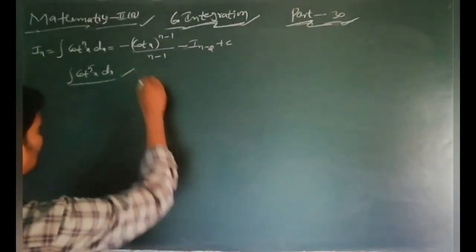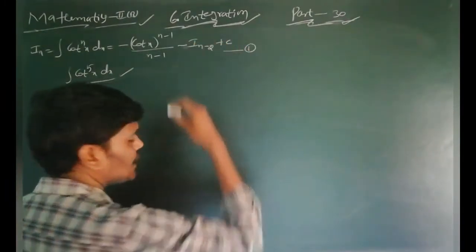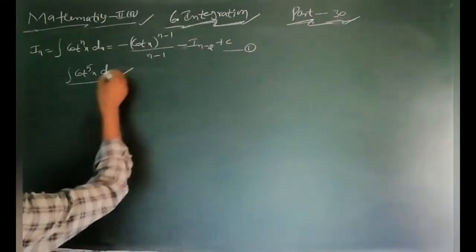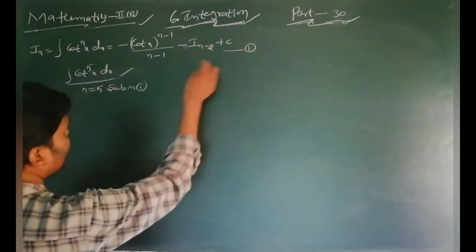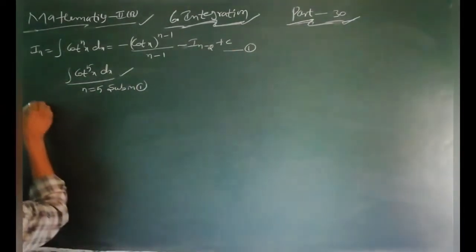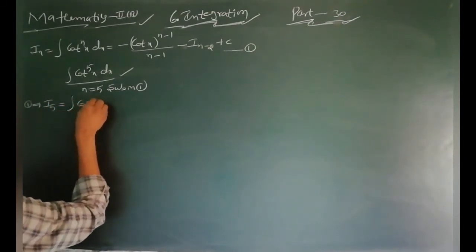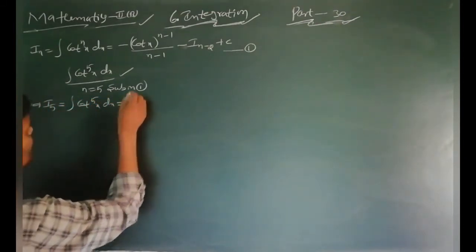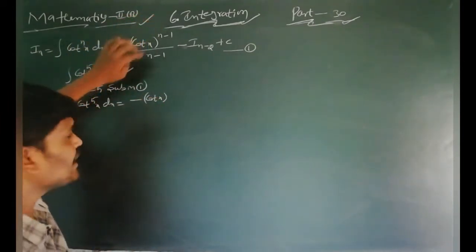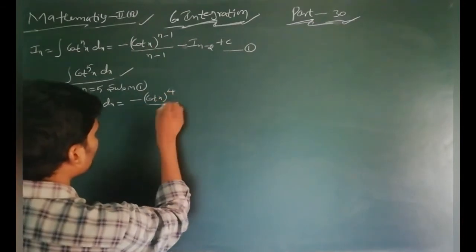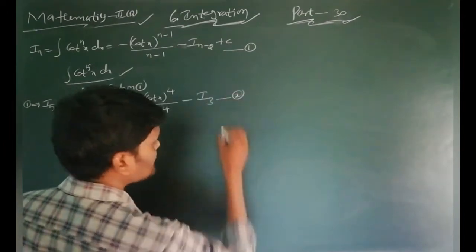The problem is: integral of cot^5 x dx. Call this equation 1 — the cot^n reduction formula. Substituting n equals 5 into equation 1 gives: I_5 equals minus cot^4 x divided by 4 minus I_3. This is equation 2.